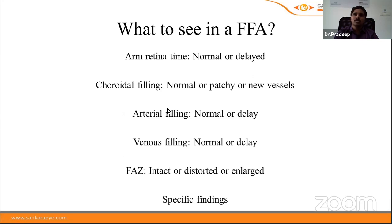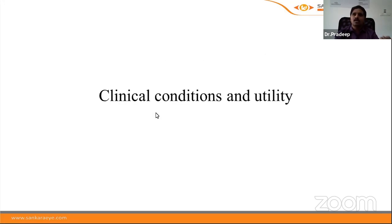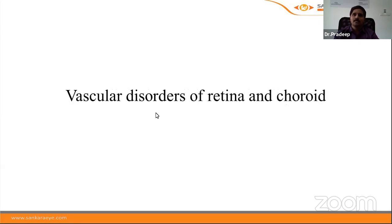What to look for in an FFA: first, note the arm-to-retina time; then assess choroidal filling — whether normal, delayed, or patchy; then arterial filling — normal or delayed; then venous filling; then the foveal vascular zone — intact, distorted, or enlarged; and finally, other specific findings pertaining to the individual disease. These steps should be followed regardless of the clinical condition being assessed.